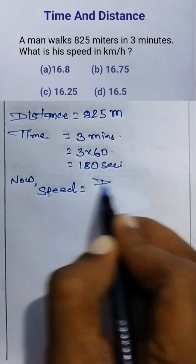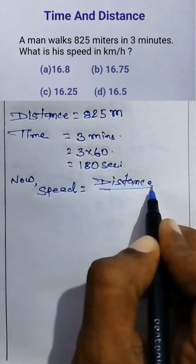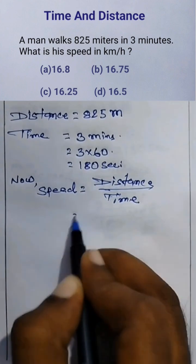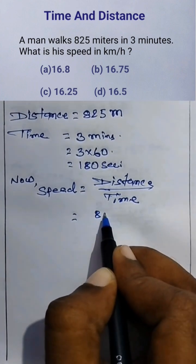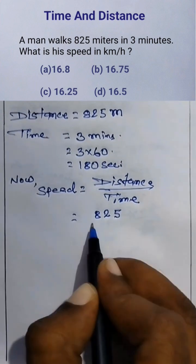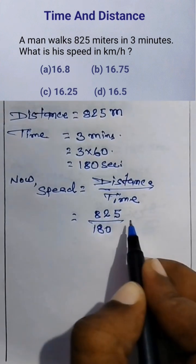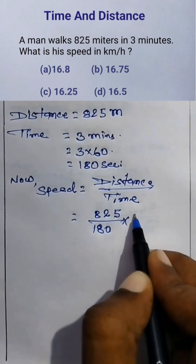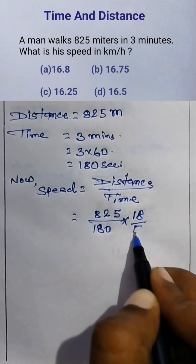Distance is given as 825 meters and time is 180 seconds. To convert from meters per second to kilometers per hour, it is multiplied by 18 by 5.